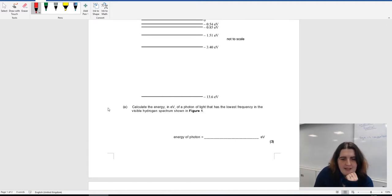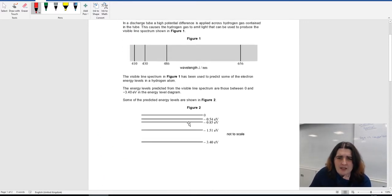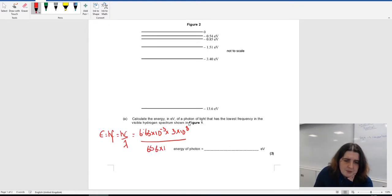What we've got here, the energy, we know that energy equals HF, which also equals HC over lambda. So that's going to be 6.63 times 10 to the minus 34 times 3 times 10 to the 8 over the biggest wavelength, which was 656 times 10 to the minus 9. And I get an answer in joules of 3.03 times 10 to the minus 19 joules. And to convert that to electron volts, to go from joules to electron volts, I need to divide by 1.6 times 10 to the minus 19. And I get an answer of 1.9 electron volts there.